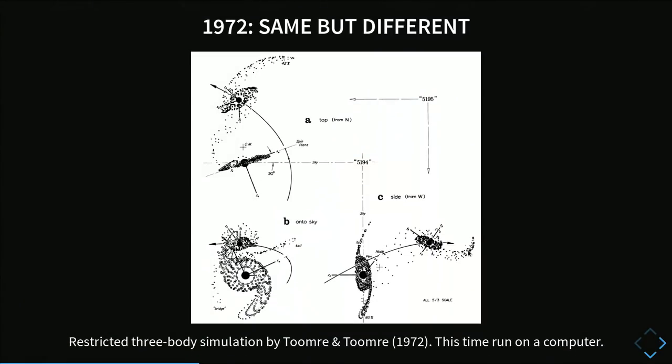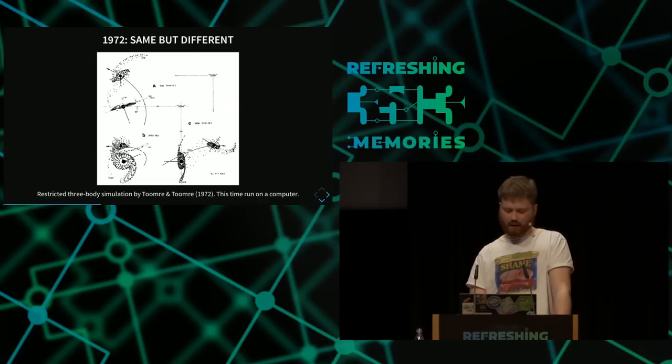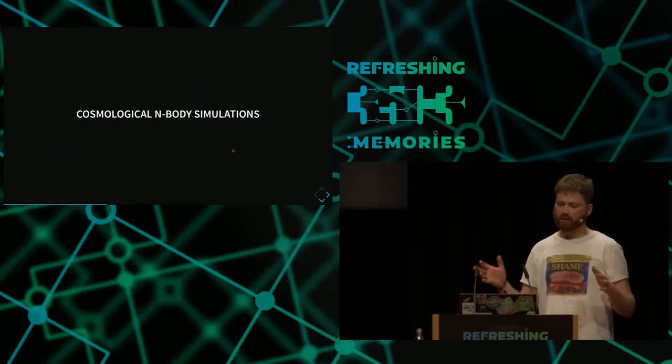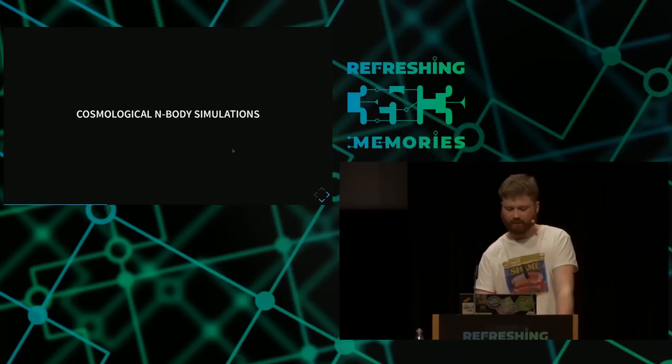When people had computers, they revisited this problem. Toomre and Toomre — uncle and nephew — wrote this paper together and we again see these tidal tails. Even nowadays some people look at simulations like that, not necessarily for the tidal tails because that's kind of solved, but for other questions. But we're actually interested in the whole universe, so we look at cosmological n-body simulations.